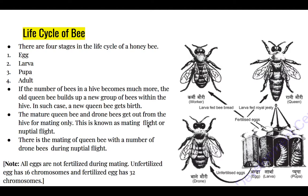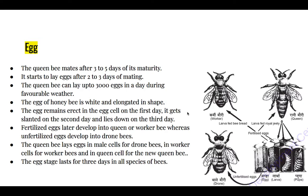When mating takes place, not all the eggs inside the abdomen of the queen bee are fertilized. Unfertilized eggs later turn into drone bees or male bees, whereas fertilized eggs later turn into worker bees or queen bees. The unfertilized egg has 16 chromosomes, whereas the fertilized egg has 32 chromosomes.